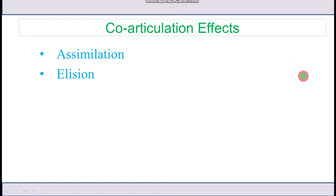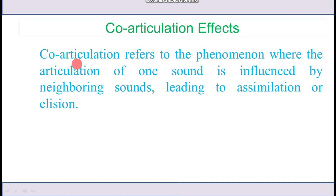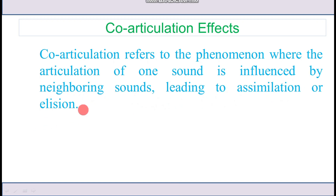Co-articulation effects: co-articulation refers to the phenomenon where the articulation of one sound is influenced by neighboring sounds, leading to assimilation or elision. Co-articulation is actually the combination of assimilation and elision.